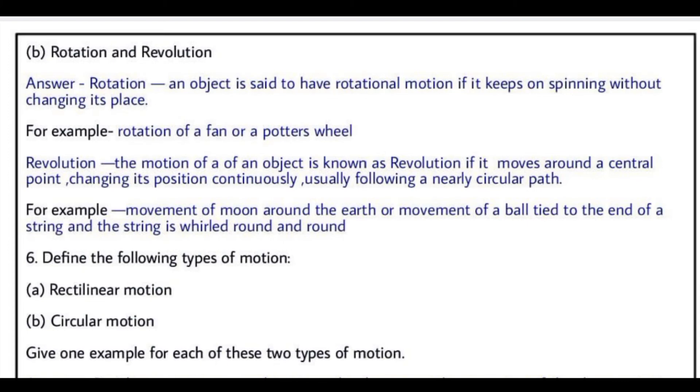Revolution: the motion of an object is known as revolution if it moves around a central point, changing its position continuously. Agar ek central point ke object ka position change karta hua hai, circular path mein ghoom raha ho, toh us tarah ke motion ko hum revolution kehte hain. Aur iska example kya hai, the movement of moon around the earth, or movement of a ball tied to the end of a string, and string is whirled round and round.